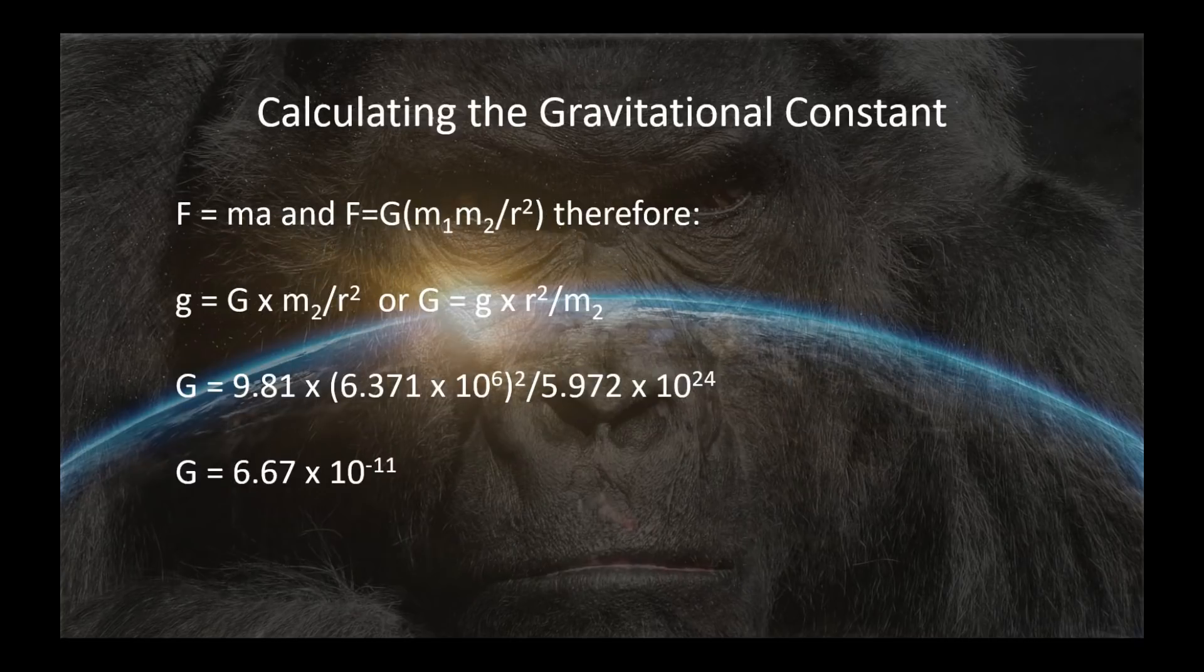Calculating the gravitational constant from what Cavendish did is really pretty simple. And let me show you exactly how you can do that. Newton gave us two formulas. One said force is mass times acceleration. The other one said force is the gravitational constant times the product of the masses divided by the square of the distance between their centroids. Now, if you set those two equations equal to each other...